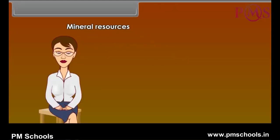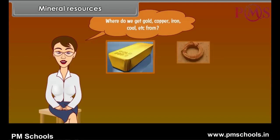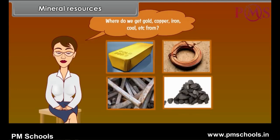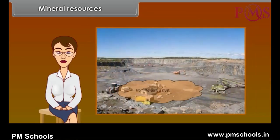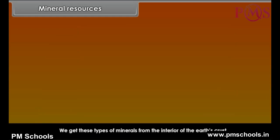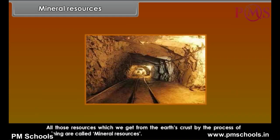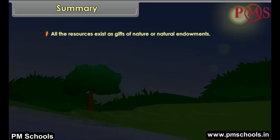Mineral resources come from the earth's crust. We get minerals like gold, copper, iron, coal, etc. from the interior of the earth's crust. All those resources which we get from the earth's crust by the process of mining are called mineral resources.